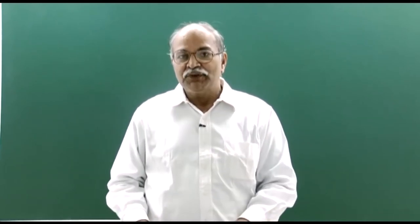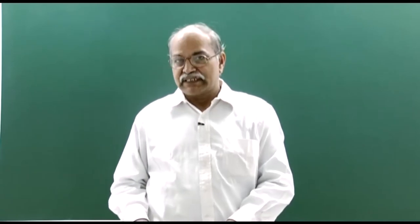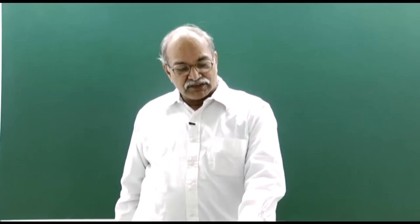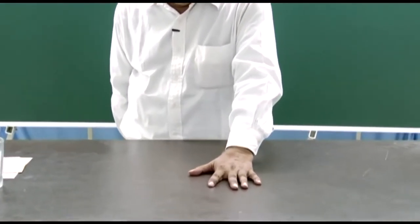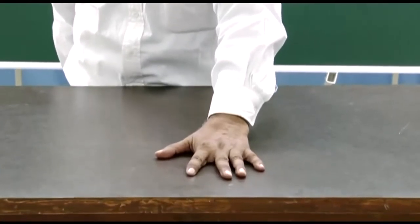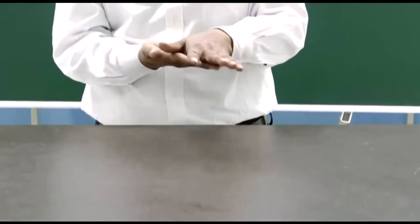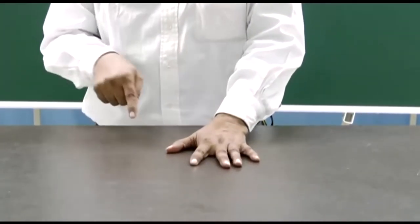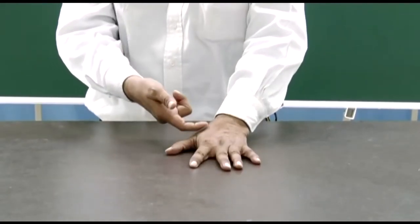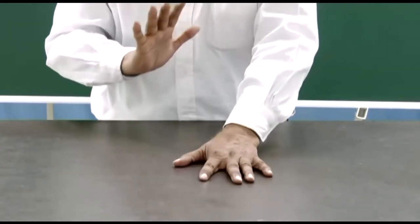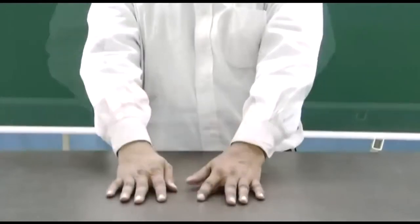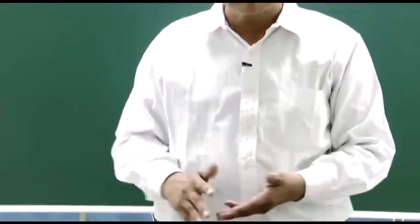Today we will be talking about friction. If two surfaces are in contact with each other, they can exert frictional forces. For example, if my hand is on this table and I move it in the forward direction, it is slipping on the surface. The table surface exerts a force on my hand in the backward direction and the hand exerts a force on the table in the forward direction. This frictional force opposes relative slipping. Any two things in contact can exert this kind of friction.